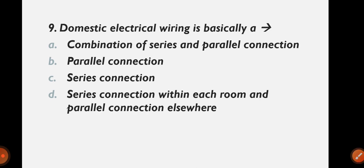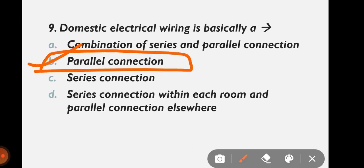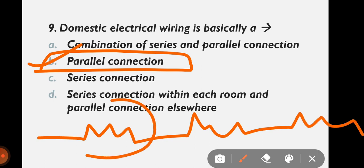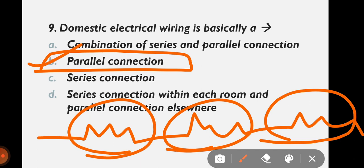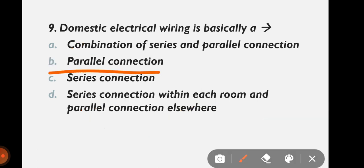Question 9: Domestic electrical wiring is basically a — series and parallel connection, parallel connection only, series connection only, or series within each room and parallel elsewhere? The correct answer is option B: parallel connection. The whole house uses parallel connection so that if a short circuit happens in one room, it stays in that room and doesn't affect others.